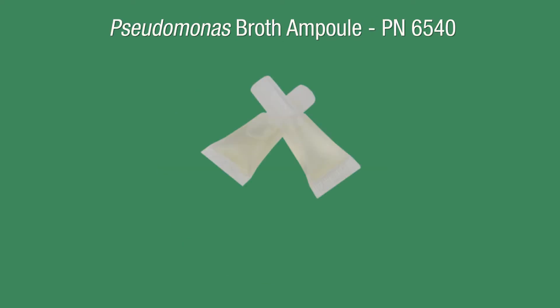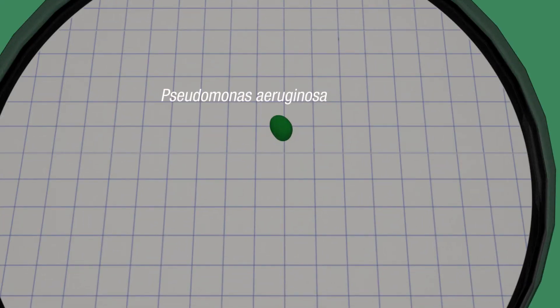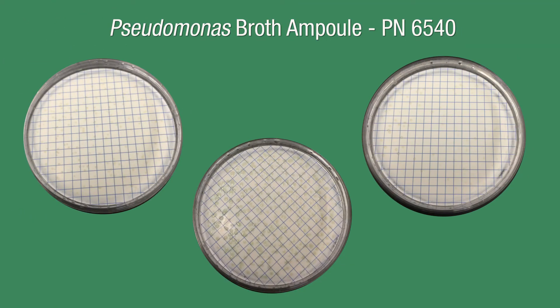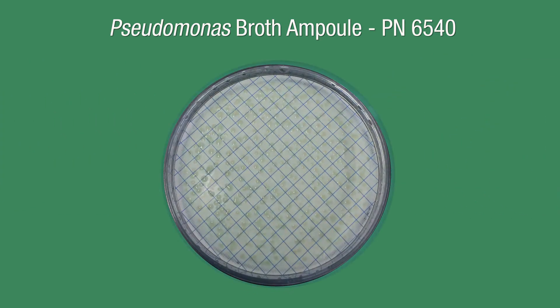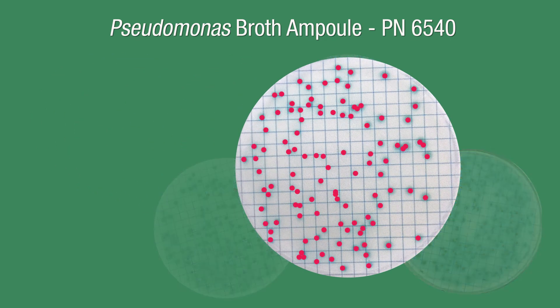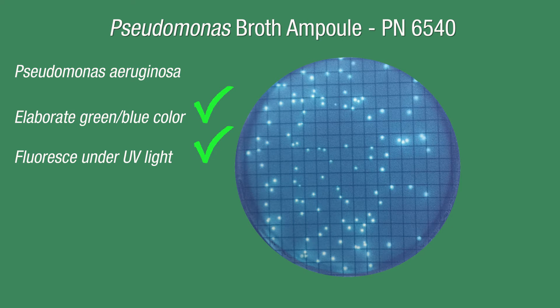Pseudomonas broth ampule. This medium is for the enumeration of Pseudomonas aeruginosa species. This selective medium should be stored at 2 to 8 degrees Celsius. Other organisms may recover, but not elaborate the blue-green color. They will be colorless to beige. Any beige colonies that recover and also fluoresce under long-wave UV light are presumptive positives for Pseudomonas fluorescens. To interpret results, count all green, blue-green, or blue colonies as Pseudomonas aeruginosa, and confirm by checking colonies for fluorescence under long-wave UV light. Pseudomonas aeruginosa will fluoresce.